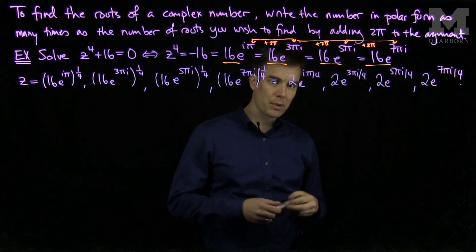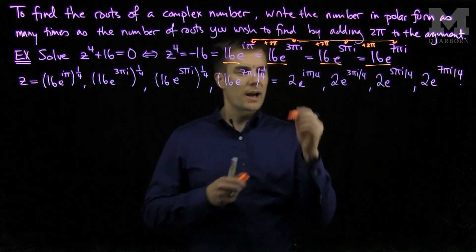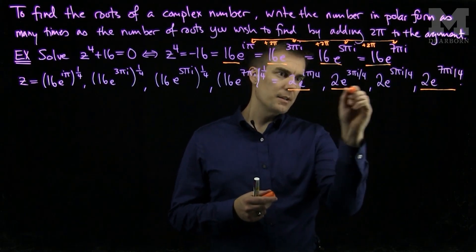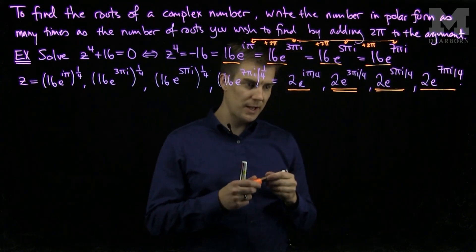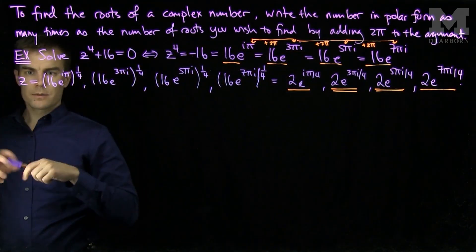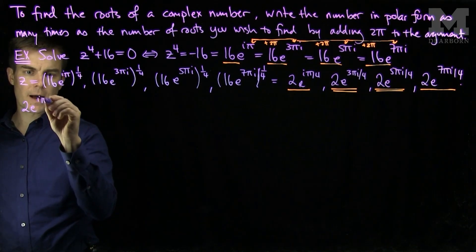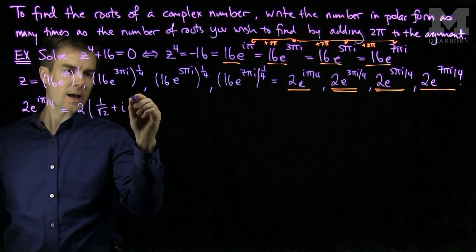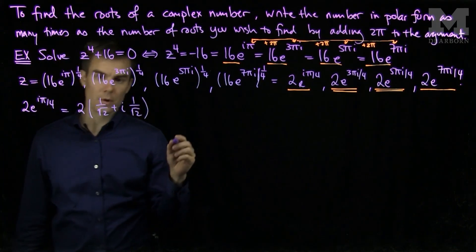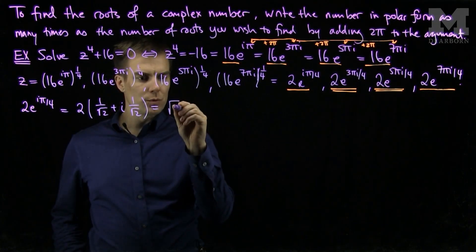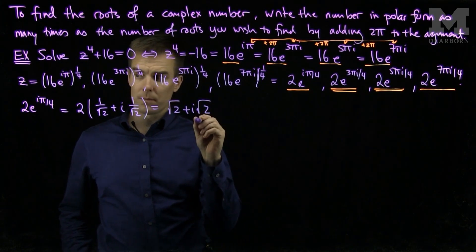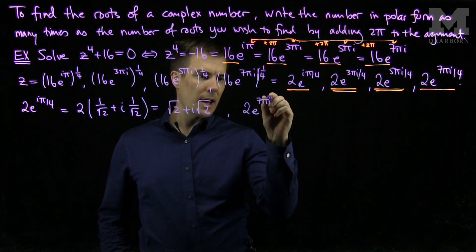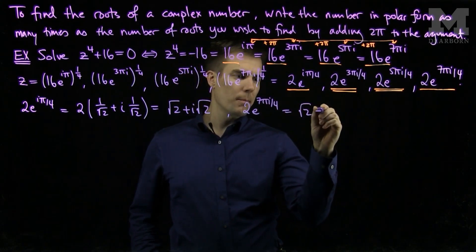We can now notice by plotting these numbers on the complex plane that this number and this number are complex conjugates of each other. And this number and this number are also complex conjugates of each other. We can write 2e to the iπ over 4 as 2 times 1 over root 2 plus i times 1 over root 2, or as root 2 plus i root 2. And similarly, 2e to the 7πi over 4 will be root 2 minus i root 2.